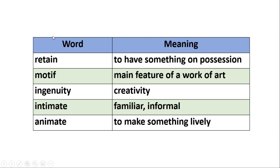Now let's see the word meanings. 'Retain' — to have something in one's possession. 'Motif' — main feature of a work of art. 'Ingenuity' — cleverness or skill. 'Intimate' — familiar or informal. 'Animate' — to make something lively.